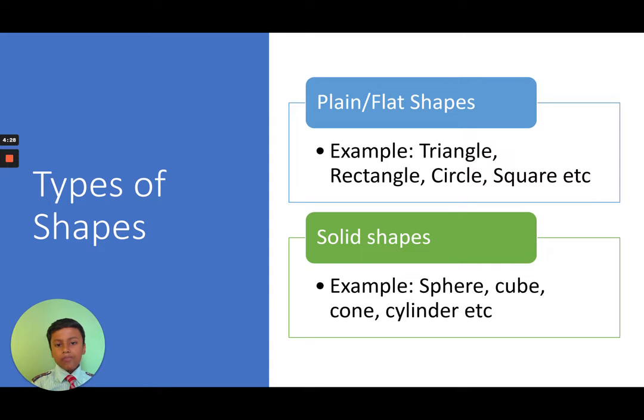Types of shapes: Plane or flat shapes include triangle, rectangle, circle, square, etc. Solid shapes include sphere, cube, cone, cylinder, etc.